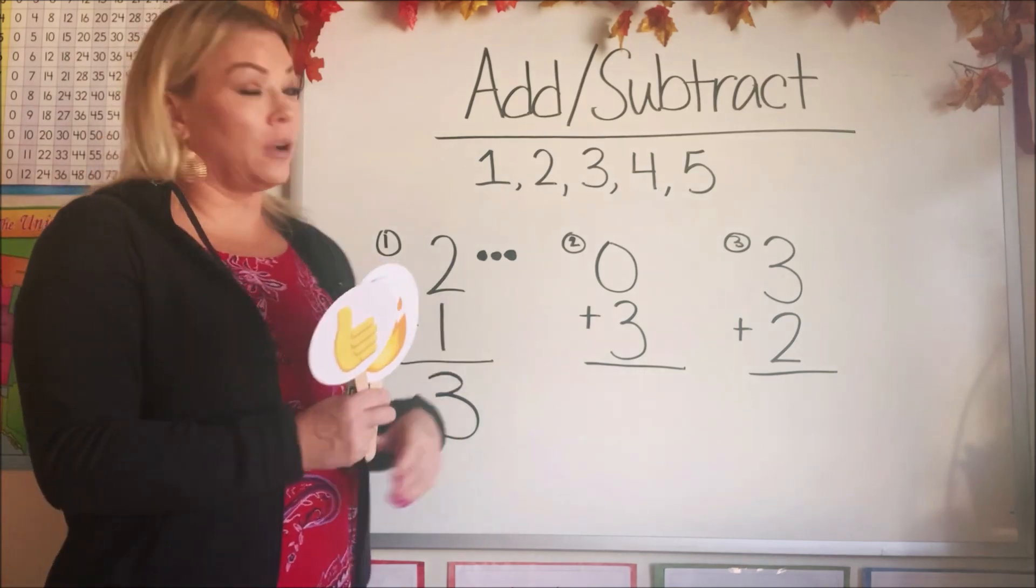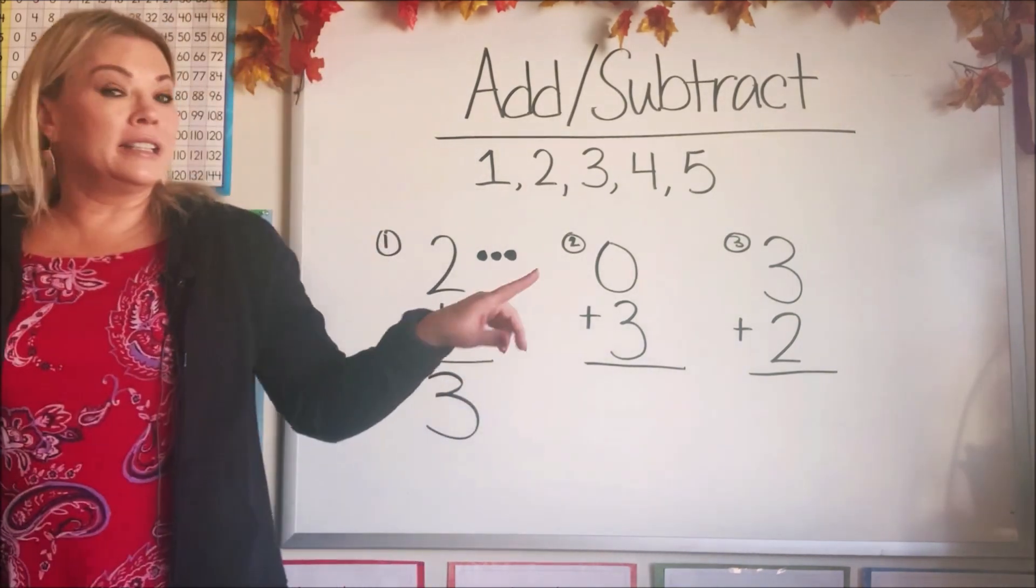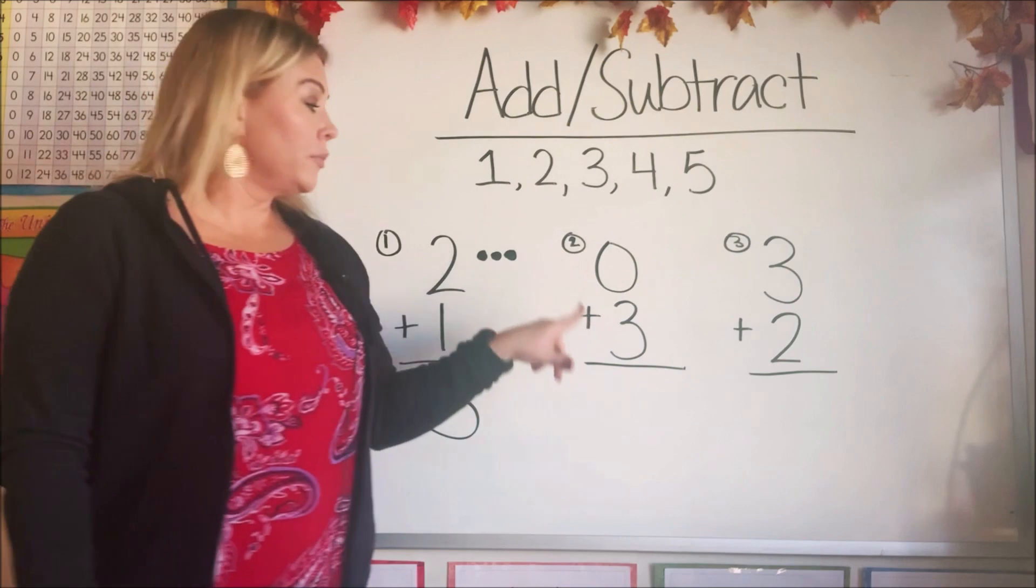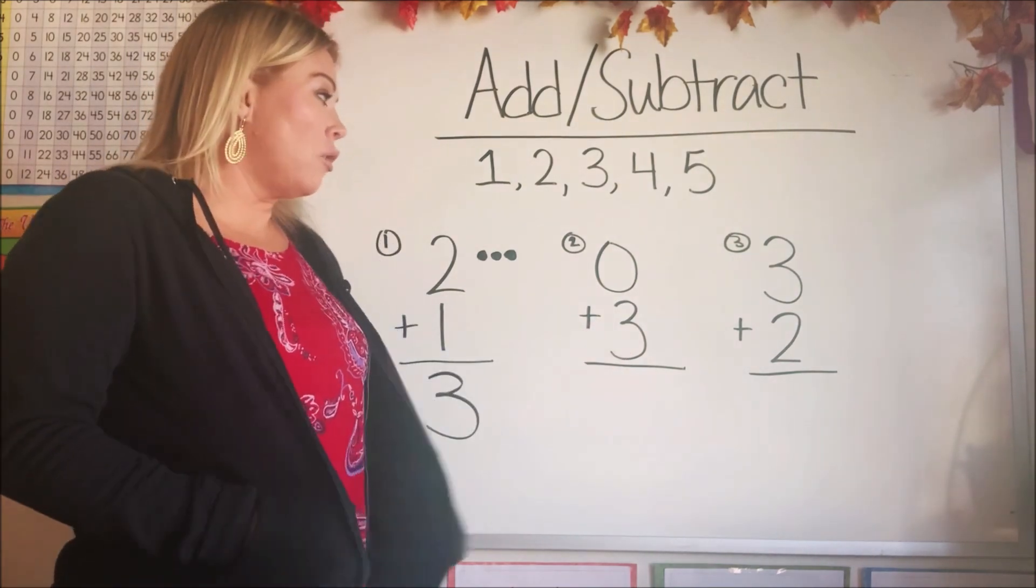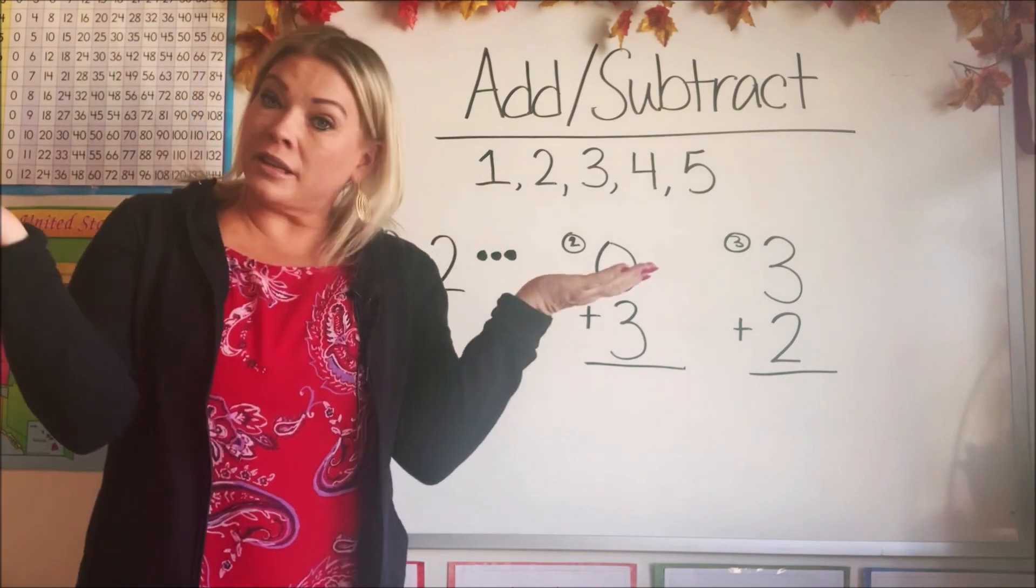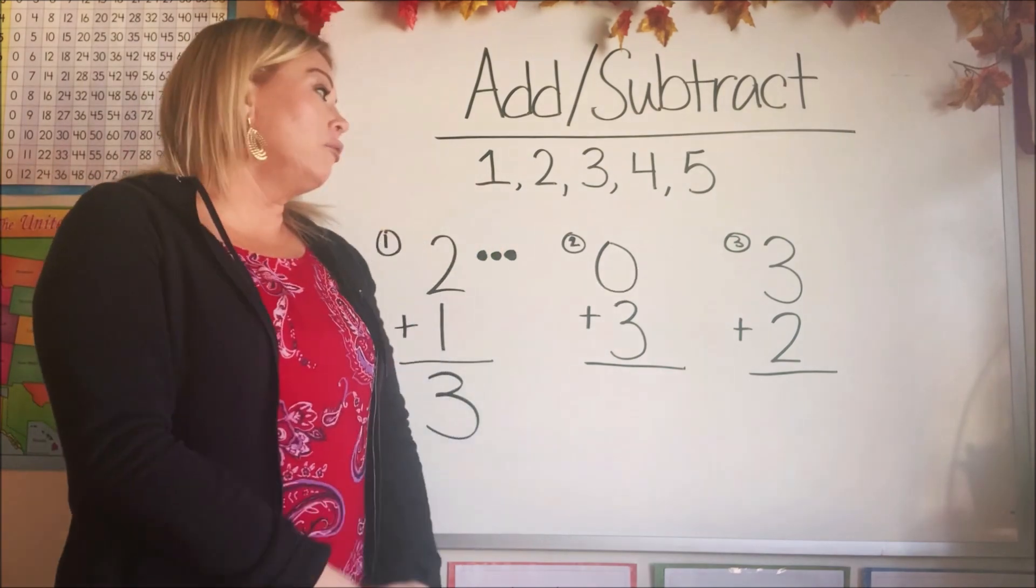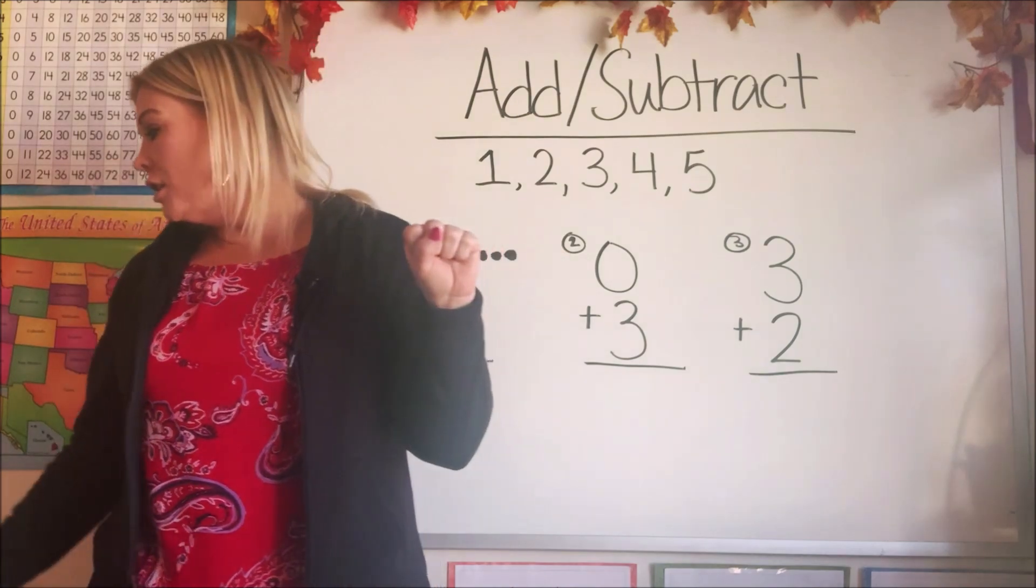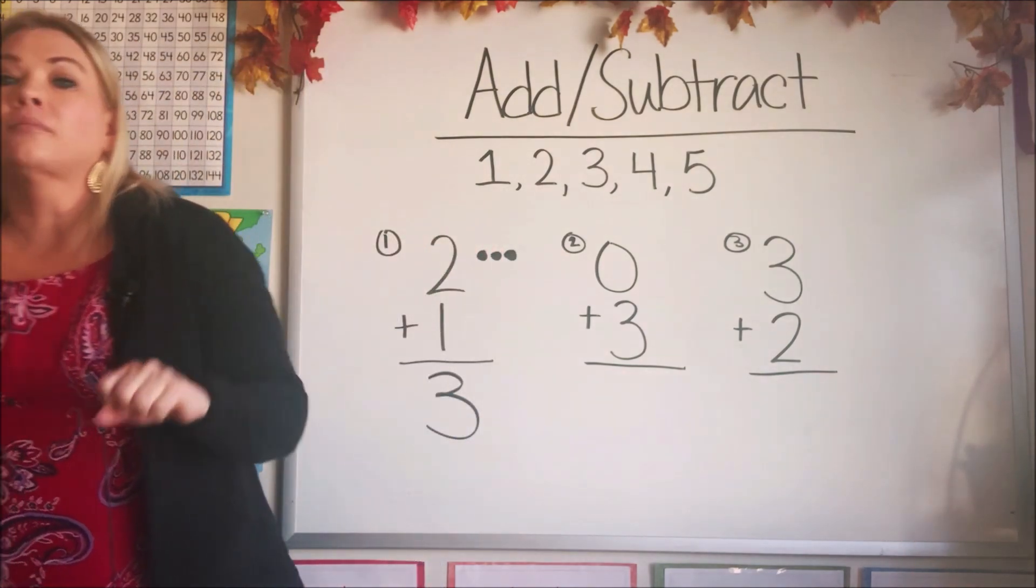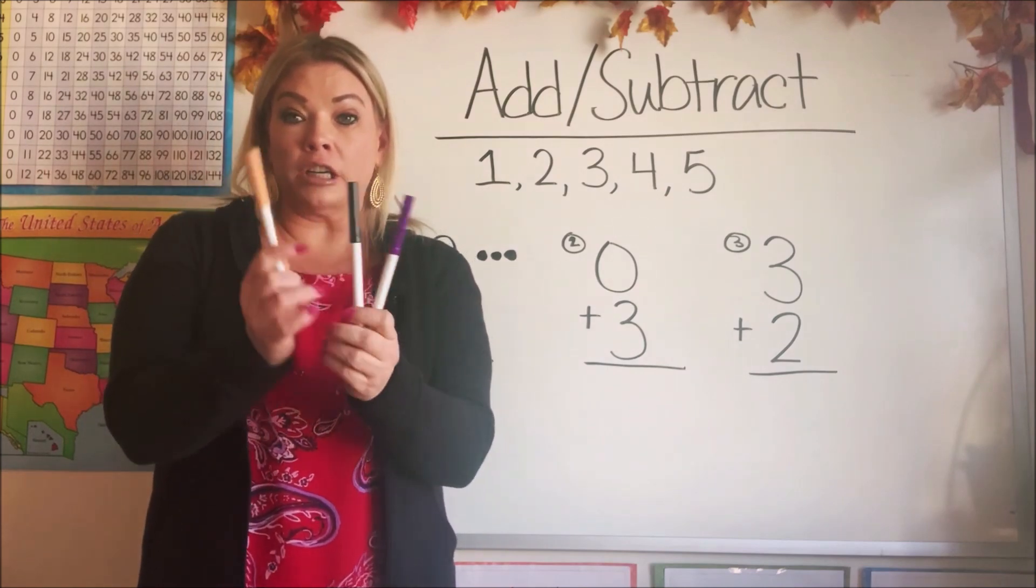So you can use anything around your house to add together to make sure that your answer is correct. Let's do the second one. It says zero plus three. Zero. Well, zero means nothing, zilch. So if we start with zero, we're going to add three things to it. So for this one, I have three markers. One, two, three.